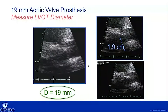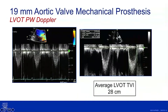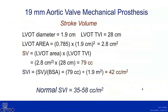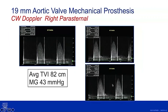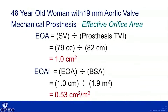We measured 19 mm for her outflow tract, fitting with the valve measurement, being careful to avoid the zone of flow convergence. We obtained a TVI for the outflow tract of 28 cm, giving a stroke volume index within normal limits at 42 cc per beat. From the apex, the mean gradient was 21 mmHg, but going to right parasternal on this pre-dismissal image — with a hemoglobin of 8.1 — she has a mechanical bileaflet prosthesis with a mean gradient of 43 mmHg. Indexed valve area was 0.53 cm² per meter squared, with preserved ejection fraction.